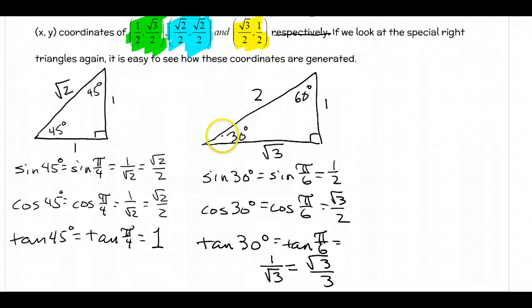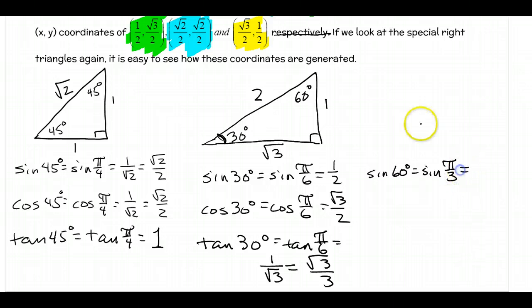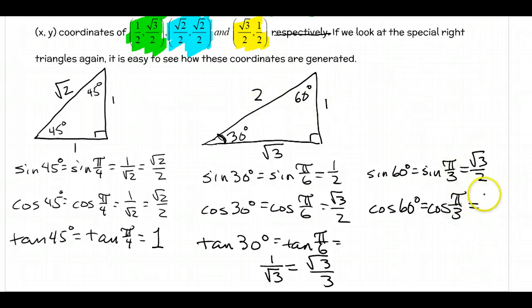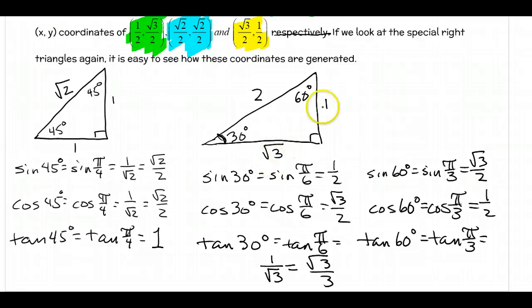That's the sine, cosine, and tangent for the 30 degree angle. Now for the 60 degree angle: sine of 60, which is sine of pi over 3, is opposite over hypotenuse — the opposite side is now root 3 — so that's root 3 over 2. Cosine of 60, which is cosine of pi over 3, is adjacent over hypotenuse = 1/2. Tangent of 60, which is tangent of pi over 3, is opposite over adjacent = root 3 over 1, which is simply root 3.